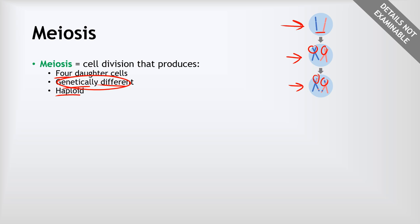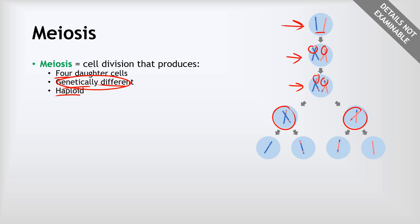This is why siblings — even from the same parents — don't look identical to each other unless they're identical twins: each egg and sperm is slightly different because of this swapping process. The cell then divides into two diploid cells, and each of those divides again without DNA duplication to form four haploid cells, each with a slightly different version of the original chromosome.